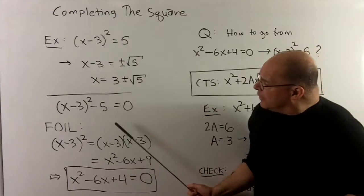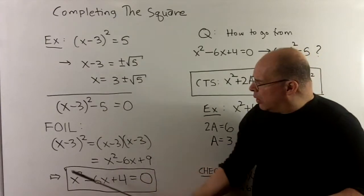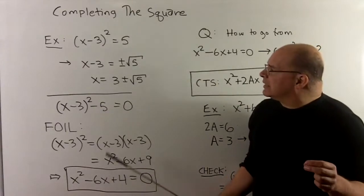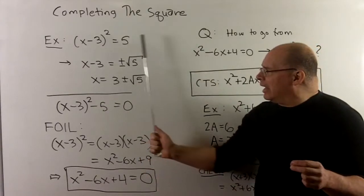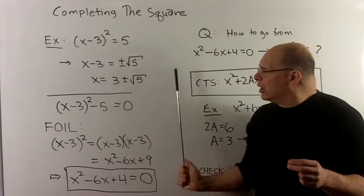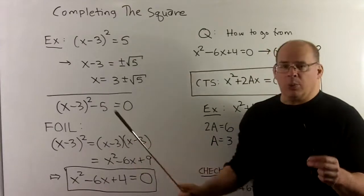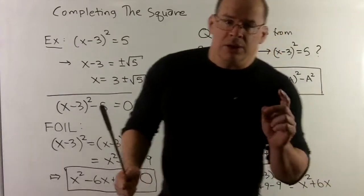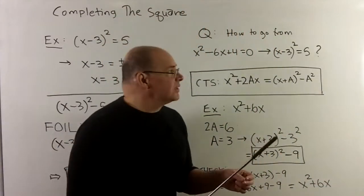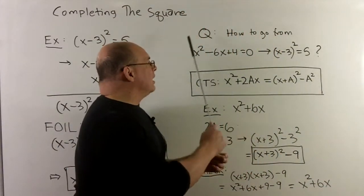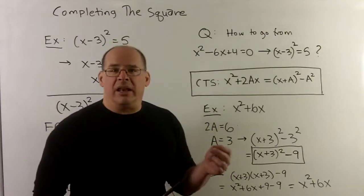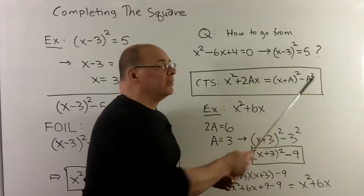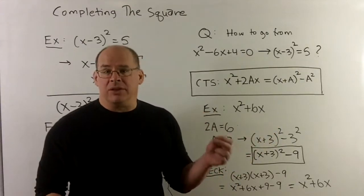You'll note that if you try to factor this using older methods, you're not going to get anywhere. That's to be expected because the roots are not the type of roots we've worked with in the past. So the big question is: if I've got a quadratic like this, how do I get it into a form where I can use the square root property? The key is completing the square.